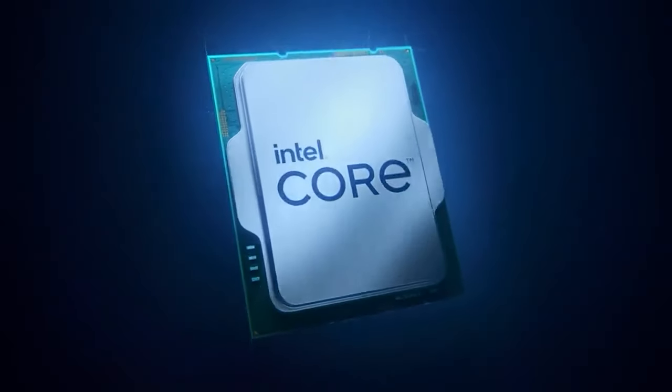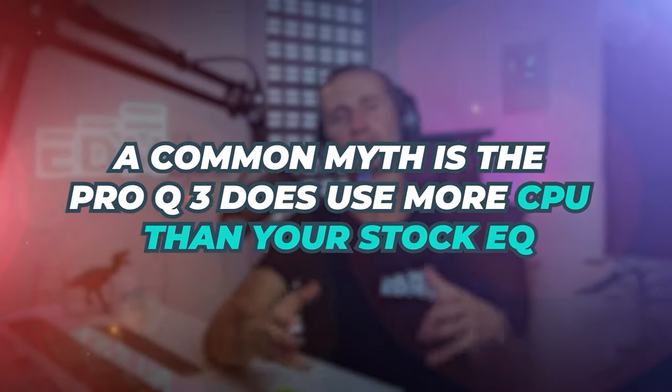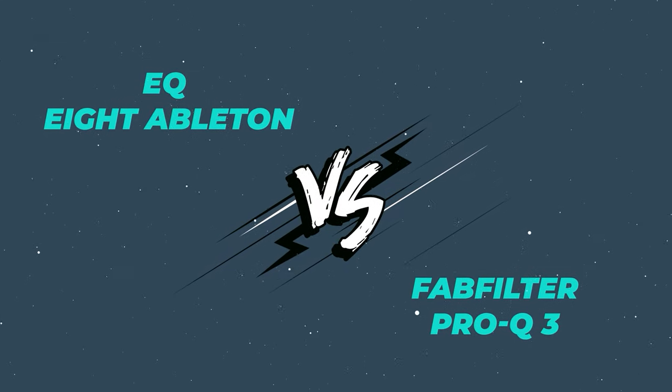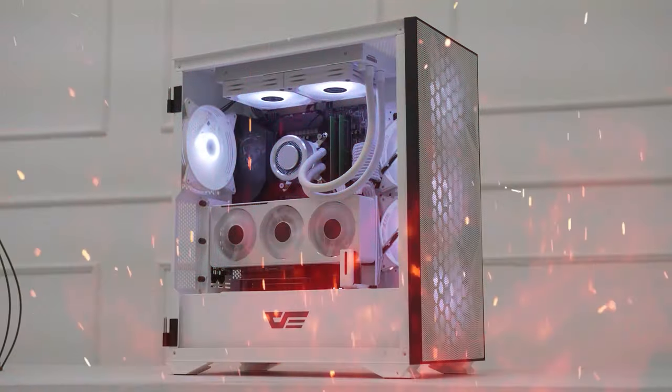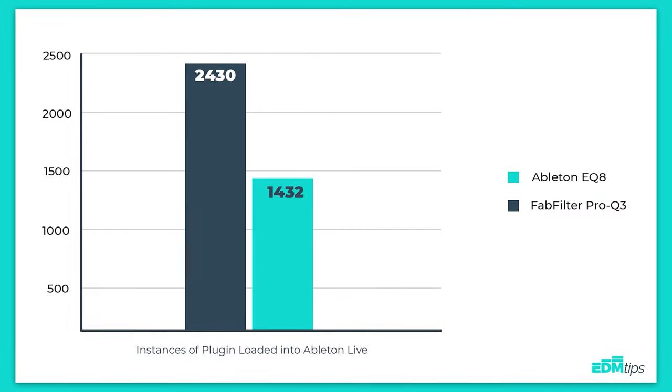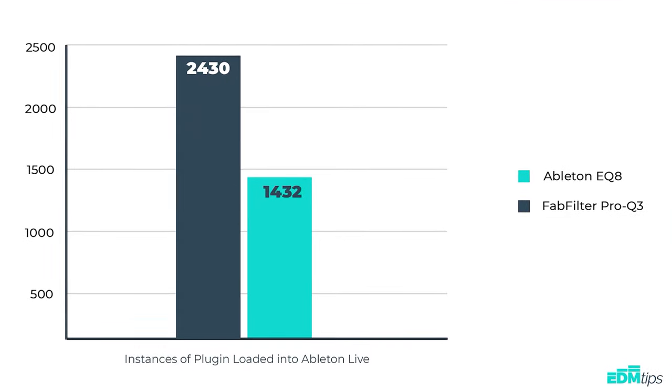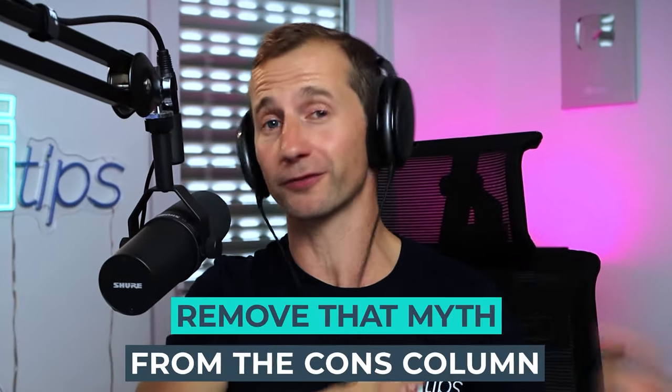Second, it uses way more CPU than the stock plugins — or so the common myth goes. I wanted to get to the bottom of this and ran a benchmark, testing how many instances of the EQ8 versus the Pro Q3 I could run before CPU difficulties. The results: I could actually run almost twice as many instances of the Pro Q3 than the Ableton EQ8. This blew my mind. So we can actually remove that myth from the cons column.